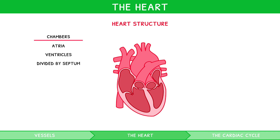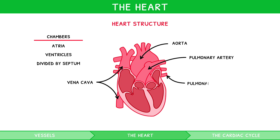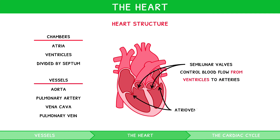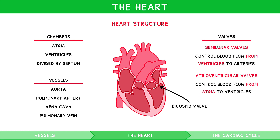The connected blood vessels are known as the aorta, pulmonary artery, vena cava, and pulmonary vein. There are four valves that control blood flow through these vessels. The semilunar valves control blood flow from the ventricles to their arteries. The atrioventricular valves control blood flow from the atria to their ventricles. On the left side it is named the bicuspid valve, and on the right side it is named the tricuspid valve. You can remember this because tricuspid has an R in it. So how does blood flow through these chambers, valves, and vessels?